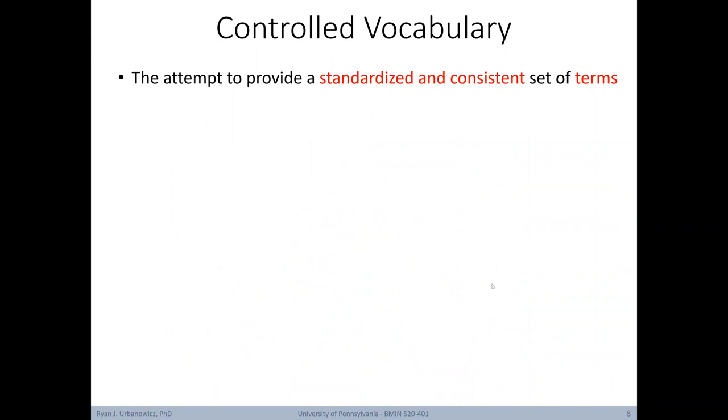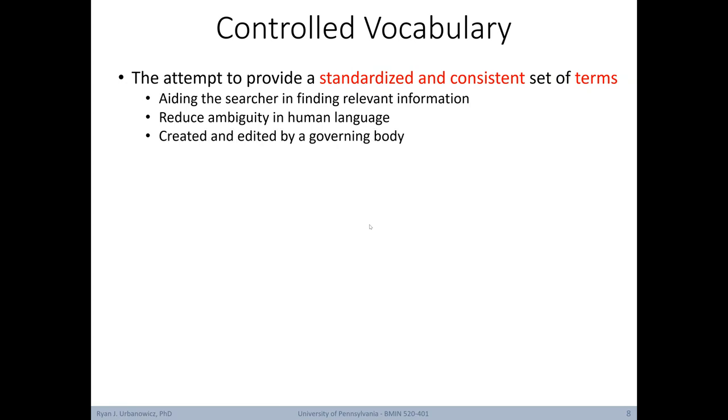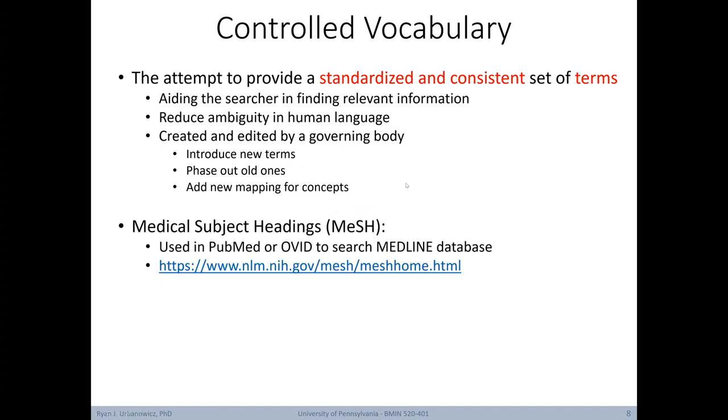Looking closer at a controlled vocabulary, this is an attempt to provide a standardized and consistent set of terms. The goal here is to aid a searcher in finding relevant information and to reduce the ambiguity in human language. Controlled vocabularies are usually created and edited by some governing body. It's the role of this body to introduce new terms, phase out old ones, and add new mappings for concepts. One example of a controlled vocabulary is the medical subject headings or MeSH. This vocabulary is used in PubMed or Ovid to search Medline databases.